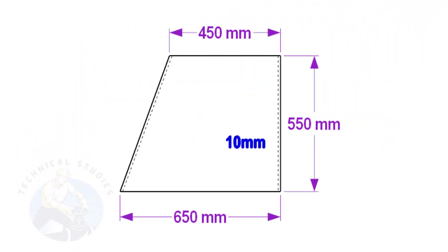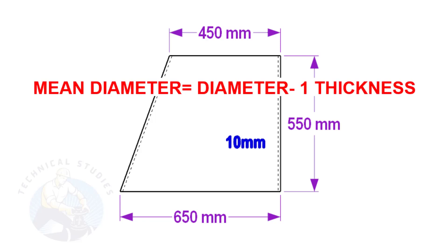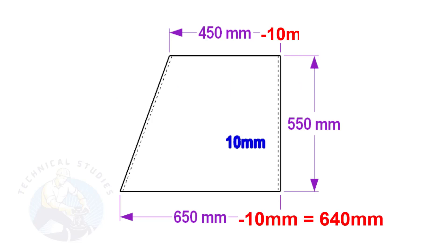To make a layout, we need to calculate the circumference of the top and bottom sides of the cone. To calculate the circumference, we need to know the mean diameter of the cone's bottom and top. Deduct 1 thickness from the diameter to get the mean diameter. Assume the base diameter of the cone is 650 mm and the thickness is 10 mm — the mean diameter is 650 minus 10, equal to 640 mm.